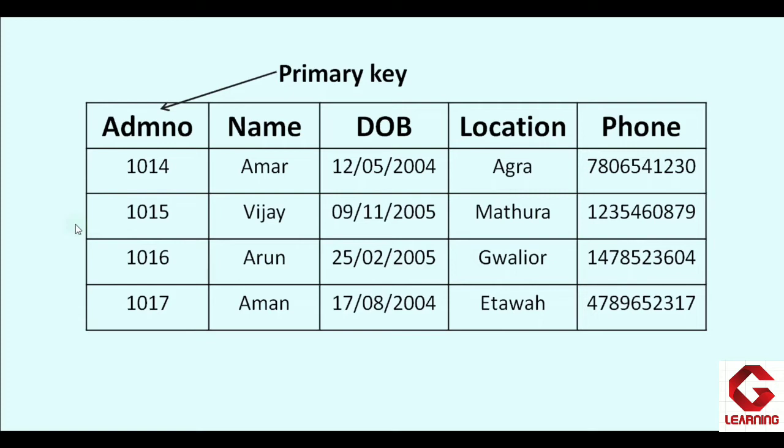Similarly, date of birth cannot be the primary key because two students may share the same date of birth, so repetition is possible. Location also cannot be the primary key since many students may be from the same location. And in the case of siblings, the form number will be the same. So name, date of birth, location, and form — all four columns may contain repeated values and therefore cannot be set as the primary key.